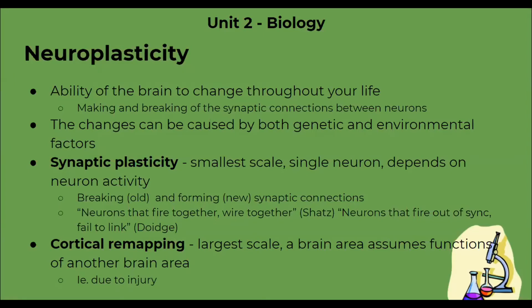One study on neuroplasticity at the level of cortical remapping was done by Merzenich — this can also be found in your book. Researchers studied the hands of eight adult monkeys. They severed some of their fingers and observed whether the function would be relocated to the other fingers or stay in the stump. They severed the middle finger, and after 62 days, they observed how the remapping was done. It was found that the cortical area responsible for that finger rewired to the adjacent fingers, increasing sensitivity in those.